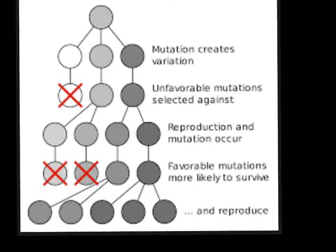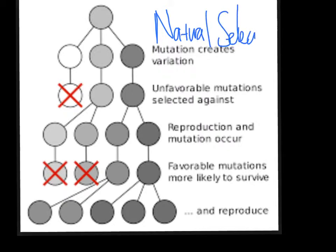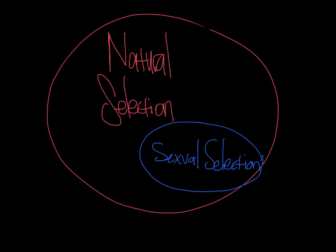Here we'll talk about some definitions and ideas leading towards Runaway Selection. First off, we'll talk about Natural Selection, defined as a gradual process by which inheritable biological traits become either more or less common in a population, as a function of the effects of inheritable traits on reproductive success. Under Natural Selection, we have Sexual Selection, defined as Natural Selection arising through preference by one sex for certain characteristics in individuals of the other sex.